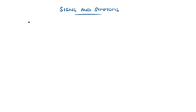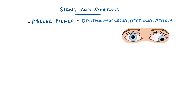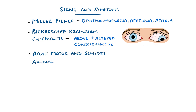Features of other subtypes include Miller-Fisher syndrome, characterised by ophthalmoplegia, areflexia, and ataxia, and Bickerstaff's brainstem encephalitis, which is similar to Miller-Fisher but also includes altered consciousness and can feature hyperreflexia. AMSAN, or acute motor and sensory axonal neuropathy, also includes axonal loss of sensory nerves.